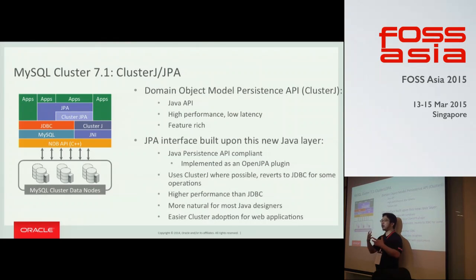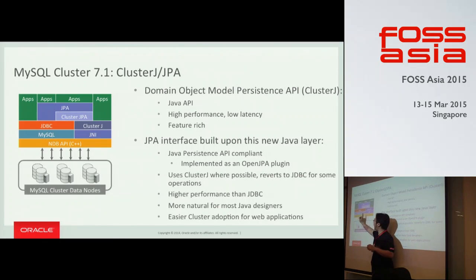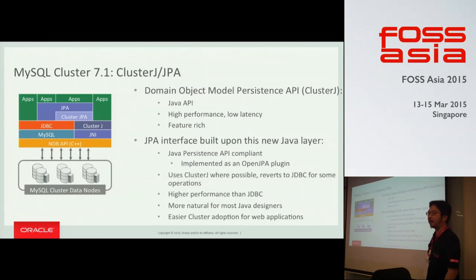If the access is key-value, ClusterJPA will use the native C++ API with very low overhead and get a quick response. But for operations not limited to key-value, ClusterJPA automatically routes to the MySQL Server and runs join operations through the SQL API.